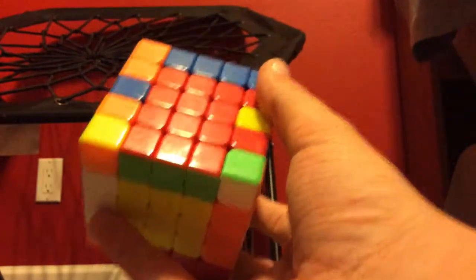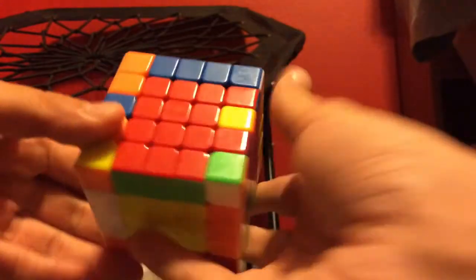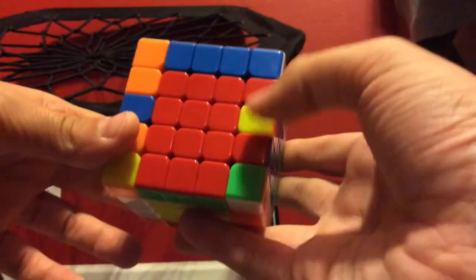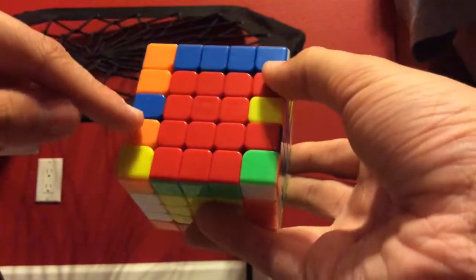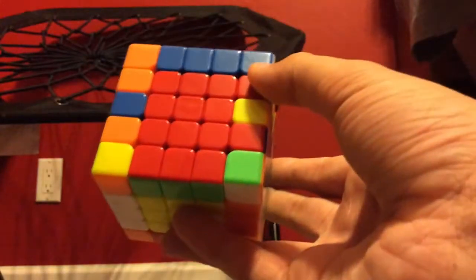So this is the first edge parity algorithm, but before you do it, you have to make sure of something. As you can tell, these two edge pieces right here do not match with that middle edge piece right there. That is not what you want.